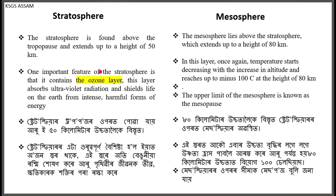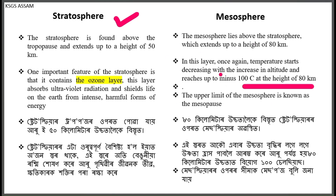It is very important that the ozone layer protects us from harmful radiation. The ozone layer is found above the troposphere and extends up to a height of 50 km. The Mesosphere lies above the stratosphere and extends up to a height of 80 km. In this layer, temperature starts decreasing with increase in altitude, reaching up to minus 100 degrees Celsius at 80 km.